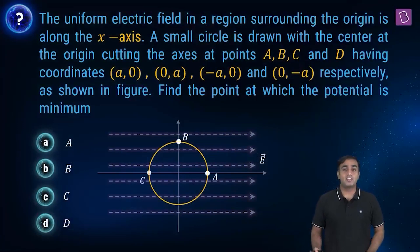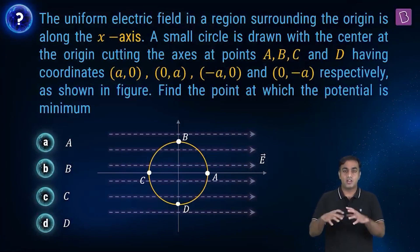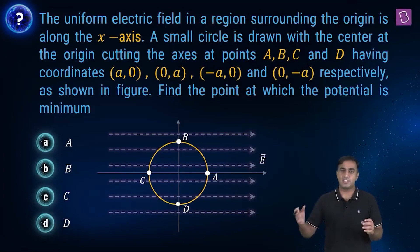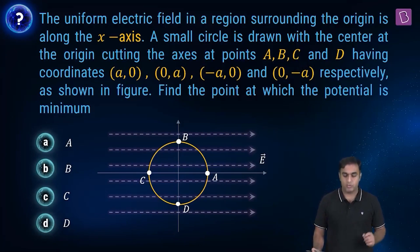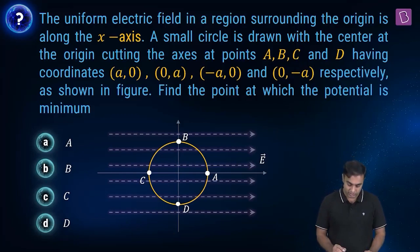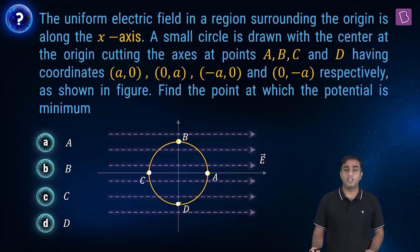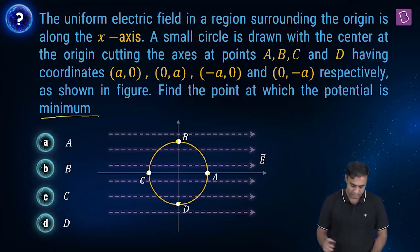In this question, we are considering a uniform electric field surrounding the origin and its direction is given to us to be along the x-axis. We are considering here 4 points A, B, C and D whose coordinates are also given to us. With this information, we need to find the point at which the electric potential happens to be minimum.